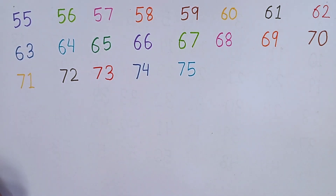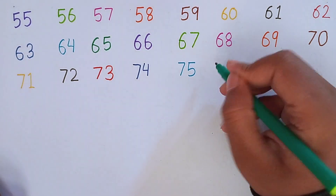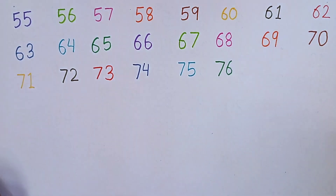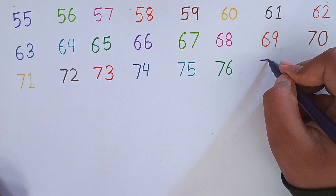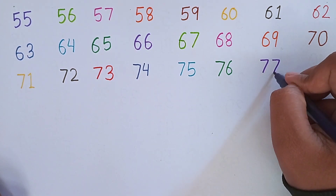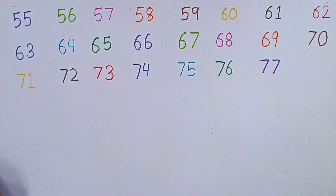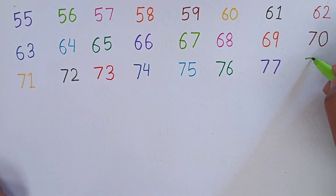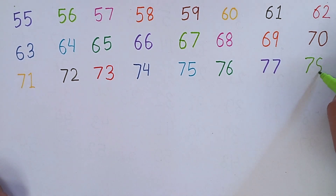Again, repeat with me: 71, 72, 73, 74, 75. Now I am writing 76. 7, 6 — 76. After 76, the next number will be 77. 7, 7 — 77. This is 77. After 77, I am writing 78. 7, 8 — 78.